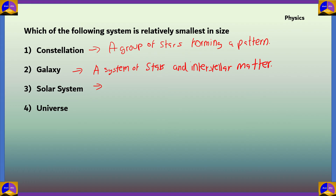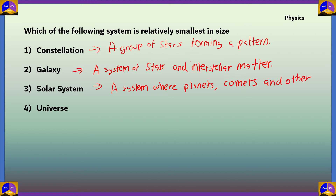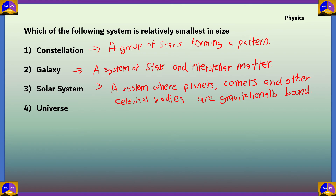Next, a solar system is a system where planets, comets and other celestial bodies are gravitationally bound — meaning planets, comets, dwarf planets, and asteroids are all revolving in an orbit around a star. And the last option is the universe, which is basically all of space and time.